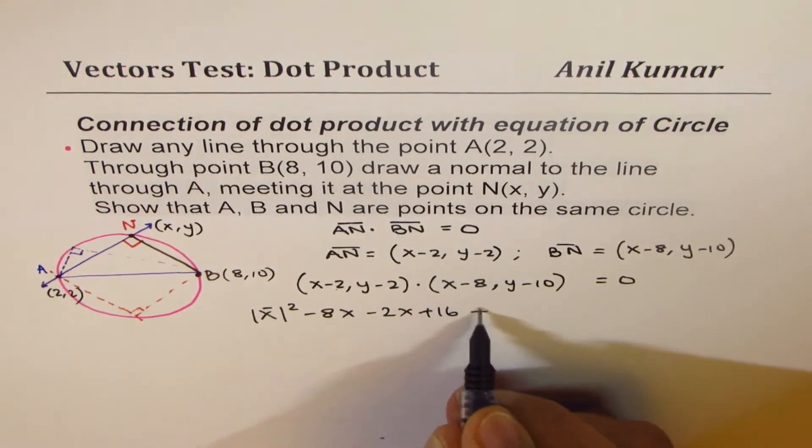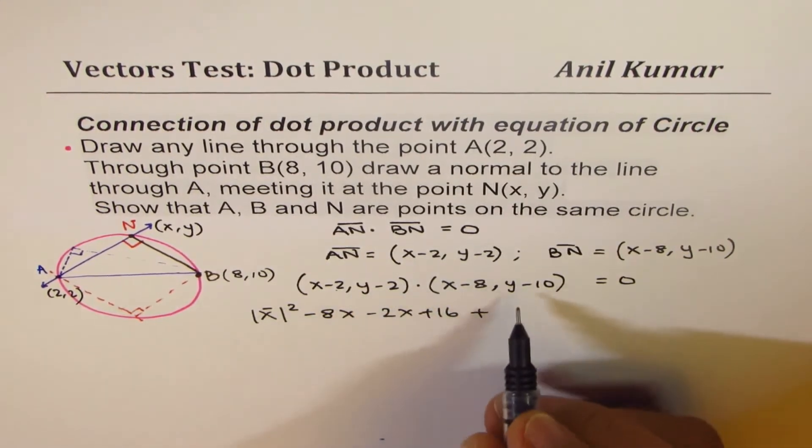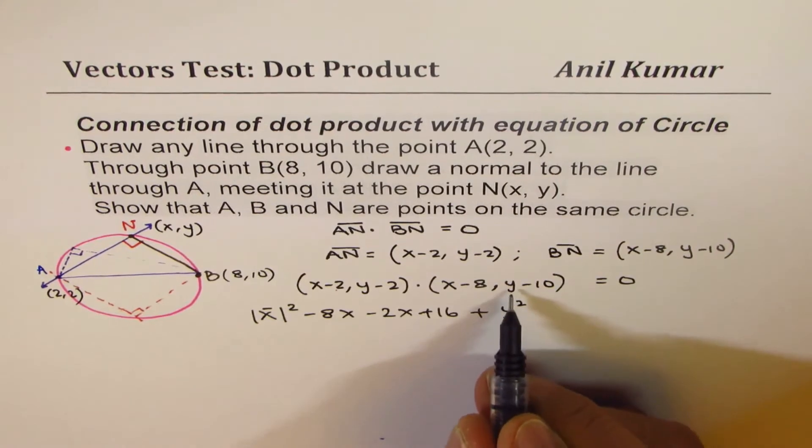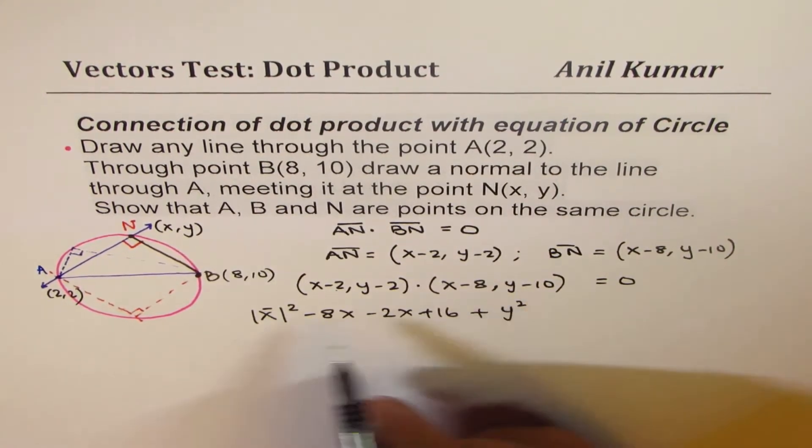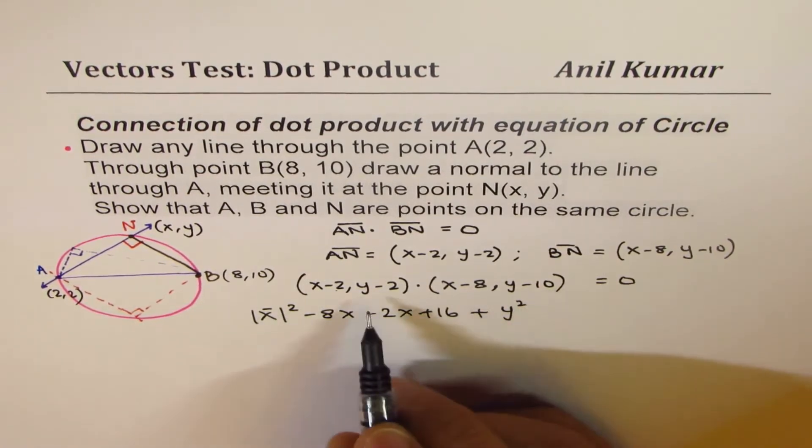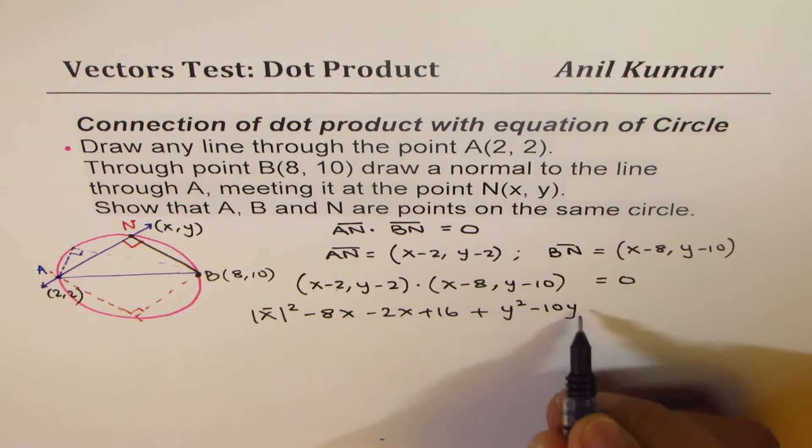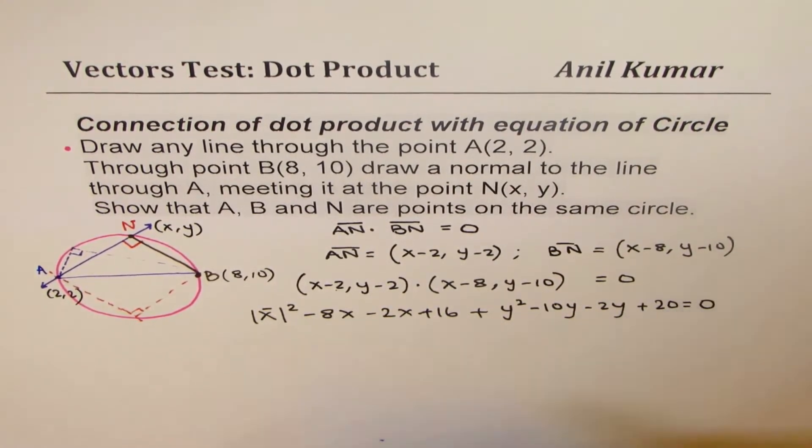Plus the Y components. So magnitudes of Y, these are all numbers. So I could write this as Y squared. Whatever this Y is, it's a number. So Y squared. And then minus 10Y, minus 2Y, and plus 20, equals to 0.